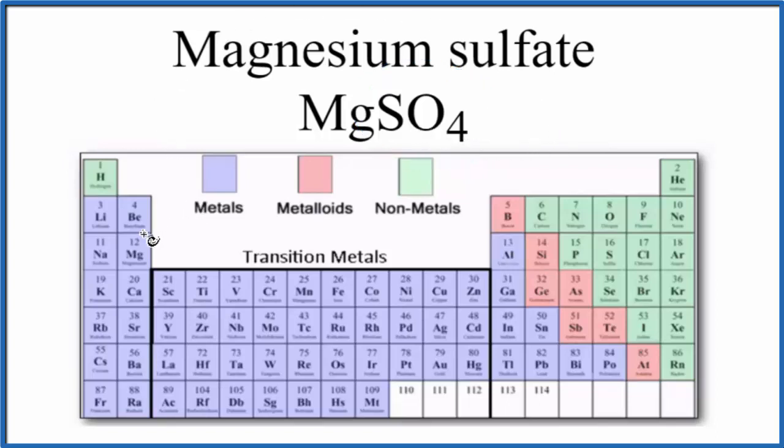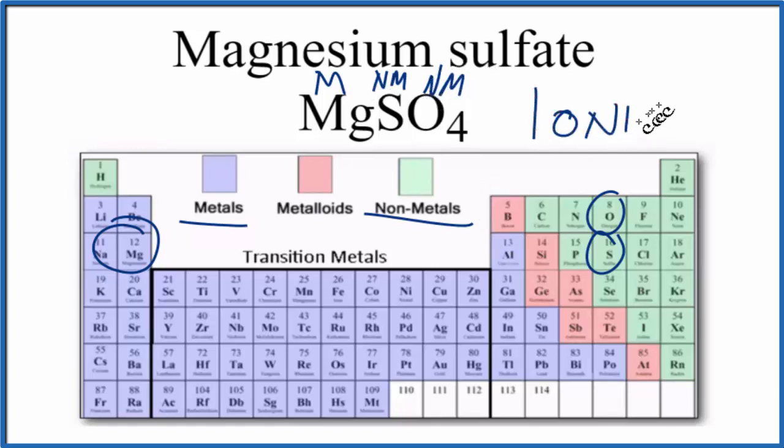If we look at the periodic table, we find magnesium. That is a metal, and then sulfur and oxygen, those are nonmetals. When we have a metal and nonmetals, we have an ionic compound. And because we have an ionic compound, we should look at the charge on each of the ions.